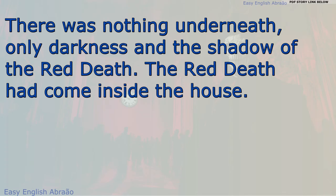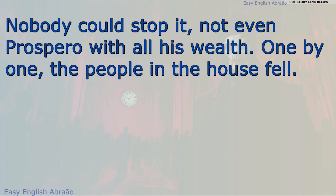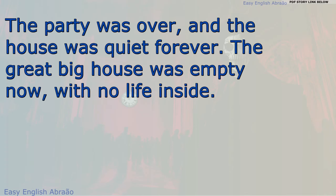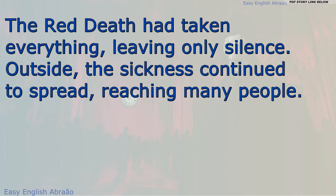The Red Death had come inside the house. Nobody could stop it, not even Prospero with all his wealth. One by one, the people in the house fell. They realized that there was no escape from the Red Death. The music stopped, and the lights went out. The party was over, and the house was quiet forever. The great big house was empty now, with no life inside. The Red Death had taken everything, leaving only silence.